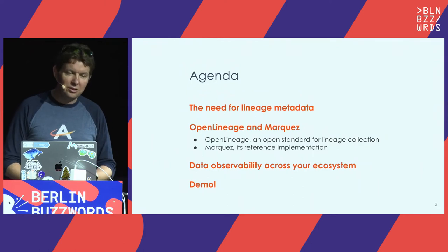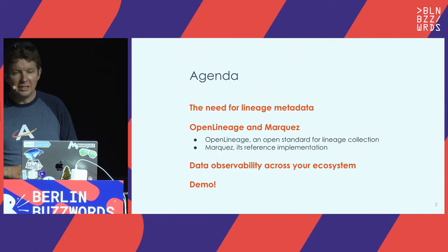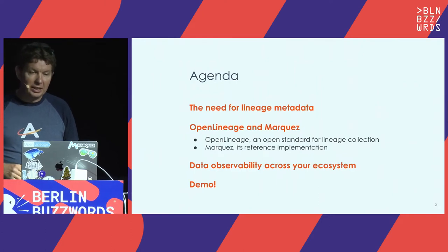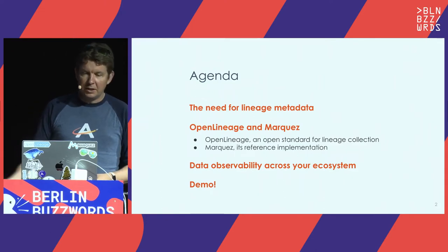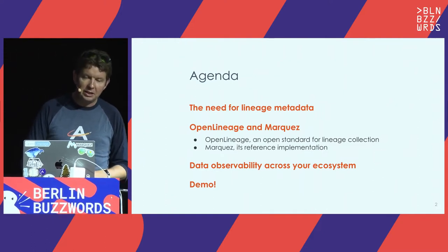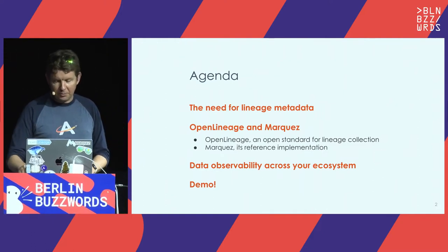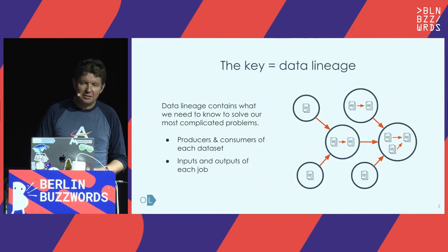For the agenda today, I'll start with talking about the need for lineage metadata, then talk about the solution with OpenLineage and Marquez open source projects that help with this. I'll talk about data observability across your ecosystem, how it integrates with Spark, Airflow, dbt, and all the things you might be using, and then end with a demo.